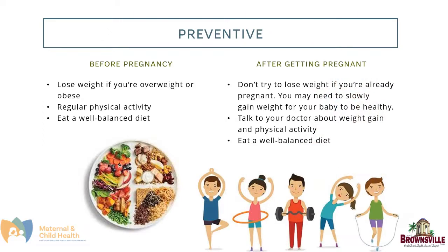To prevent gestational diabetes before pregnancy: lose weight if you are overweight or obese, do regular physical activity, and eat a well-balanced diet. If you are already pregnant, don't try to lose weight — you may need to slowly gain weight for your baby to be healthy. Talk to your doctor about weight gain and physical activity, and eat a well-balanced diet.